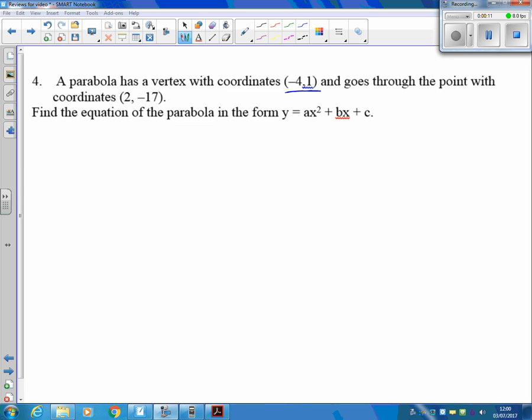We've got our vertex here, so we know it's going to be x plus 4 all squared, and we know we're going to have to have a plus 1 on the end. But we don't know what this part here is going to be times by, so I'm going to put a k in front of it there. I'm going to try and find out what that k is in a minute.